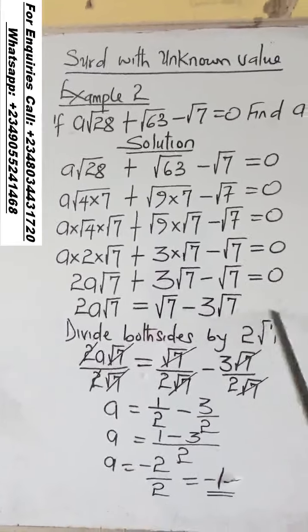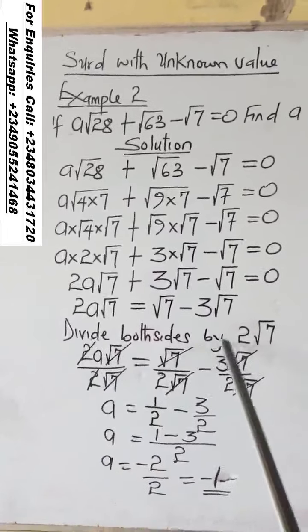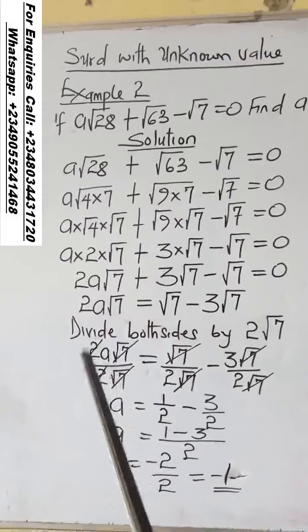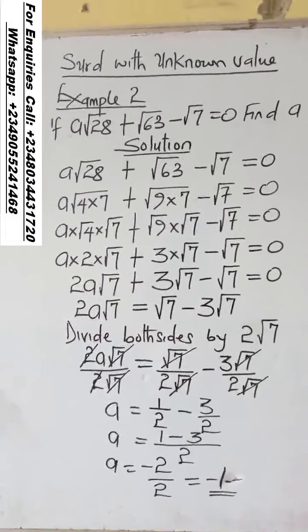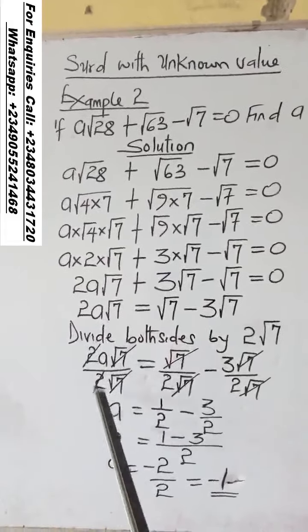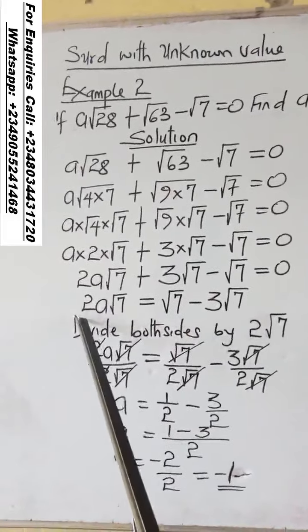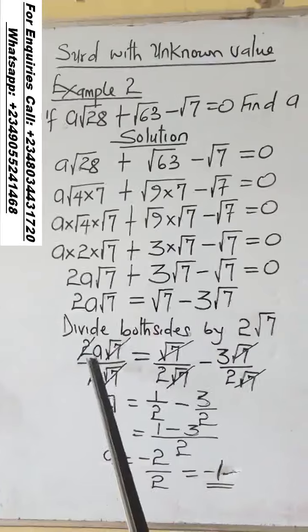So divide both sides by 2 root 7 to get the A you are looking for. Divide both sides by 2 root 7 to leave us with A.